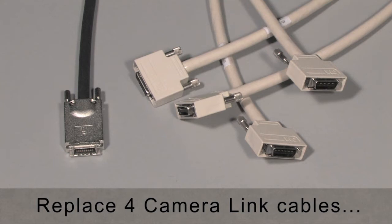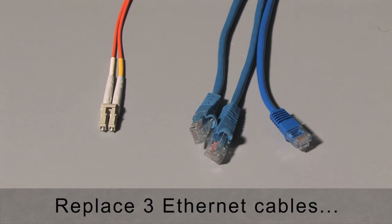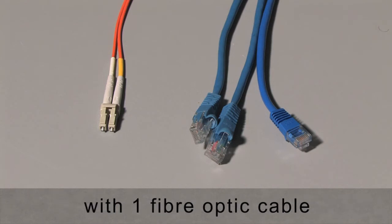CameraLink HS is designed to simplify cabling. CameraLink HS replaces four CameraLink cables with one CameraLink HS cable. It can take three gigi cables and replace them with one fiber optic connection.